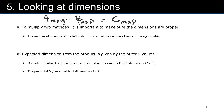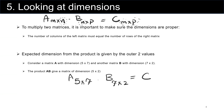The expected dimension of the product is given by the outer two values. For example, if you have matrix A with dimension 5 by 7 multiplied by matrix B with dimension 7 by 2, the result is going to be 5 by 2 — the outer values.